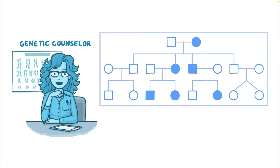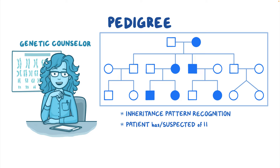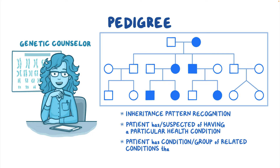Some specialists, like genetic counselors, prefer to use a graphic visualization of family history called a pedigree. Pedigrees are particularly useful for inheritance pattern recognition when a patient has, or is suspected of having, a particular health condition, or has a condition or group of related conditions that run in the family.